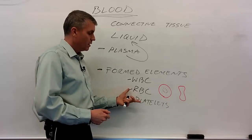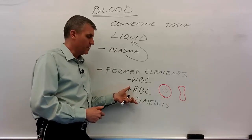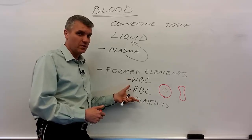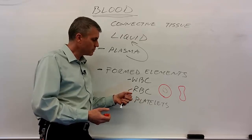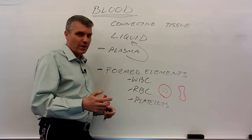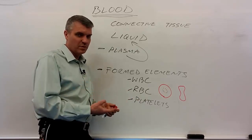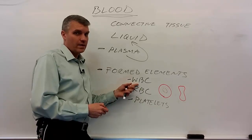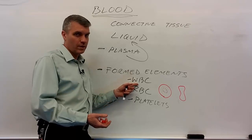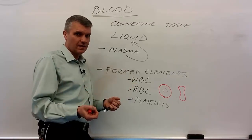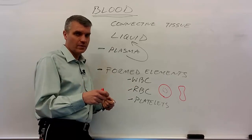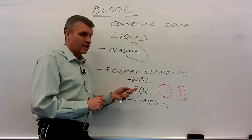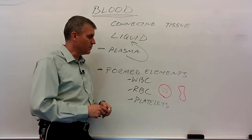All of the formed elements have their ultimate birthplace in myeloid tissue, found in red bone marrow in the adult. In the embryo, myeloid tissue is found in the spleen and the yolk sac initially. Some white blood cells, though ultimately born in myeloid tissue, seeded the thymus and other lymphatic tissues where they can continue to divide, so down the road they can also come from the thymus and other lymphoid tissues.